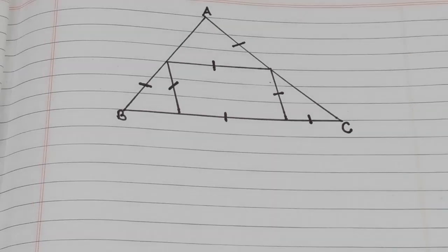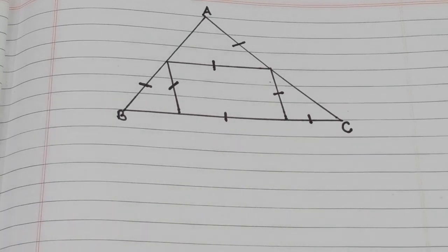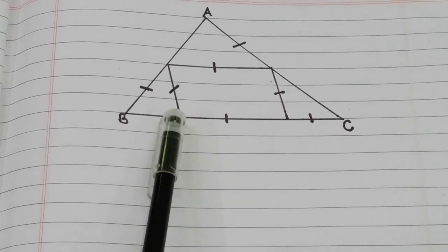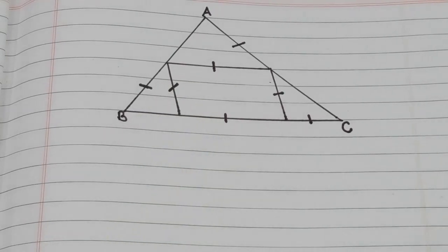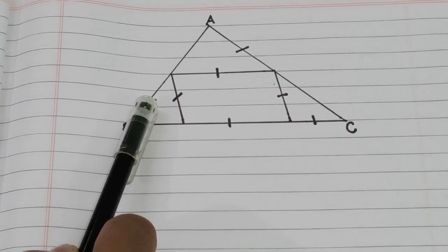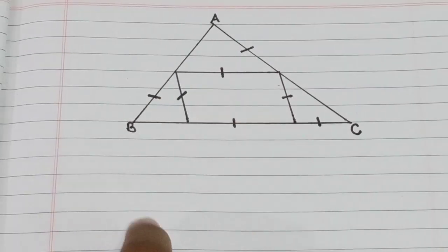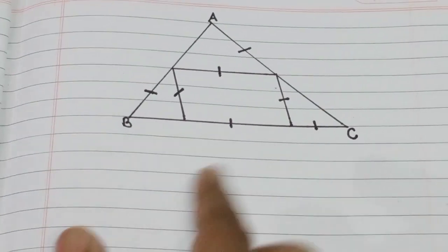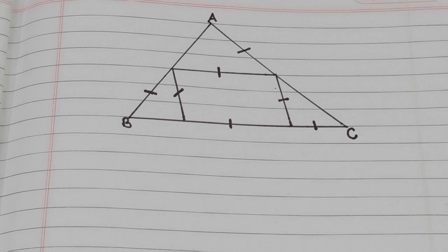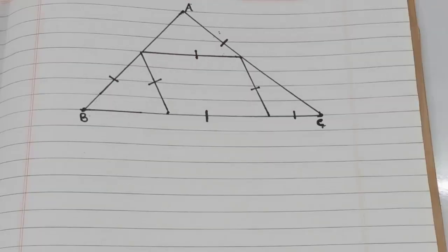So guys, if we look at the question, here we have a triangle and we don't know what type of triangle it is. There is an inscribed quadrilateral in it, and the sides marked with this sign are equal. We have to find all the angles of this triangle — that means angle A, B, and C.